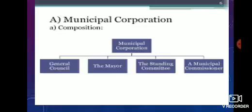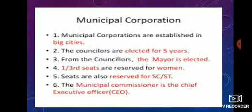Cities with a population of more than 10 lakh have municipal corporations as their local self-governing body. Members are elected through voting by registered adult voters. To conduct municipal elections, the city is divided into small constituencies called wards. Each ward has one elected representative called the councillor. The corporation is elected for a period of five years. Seats are reserved for Scheduled Castes, Scheduled Tribes, and women. The mayor, known as Mahapradhaan, is the head of the corporation and is elected by the members.